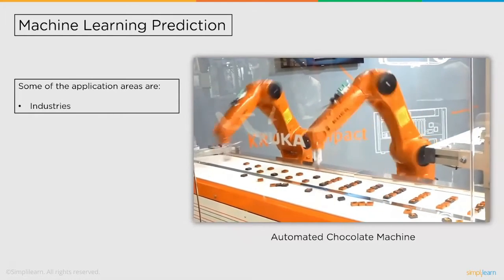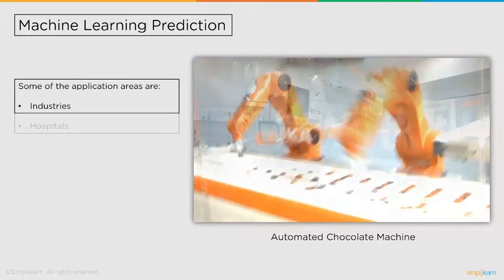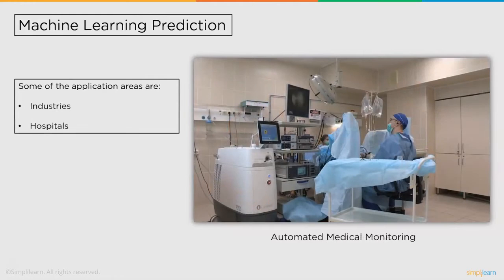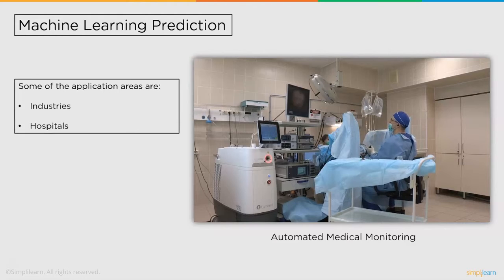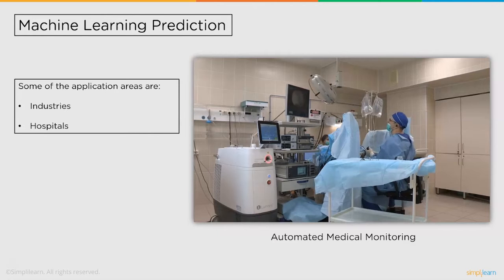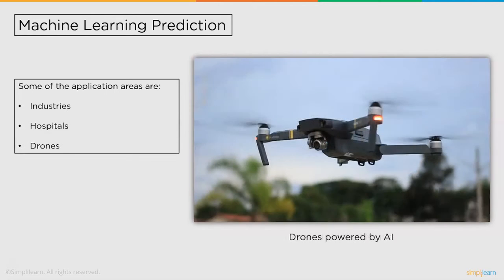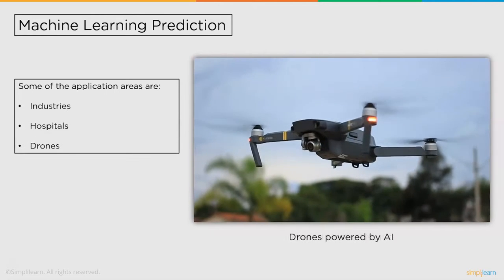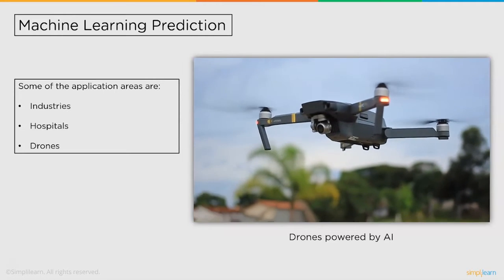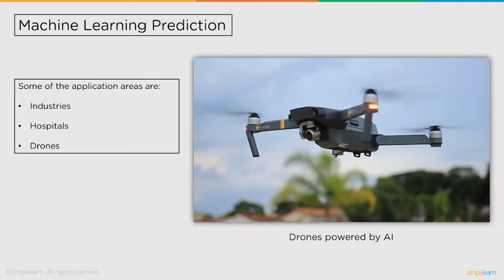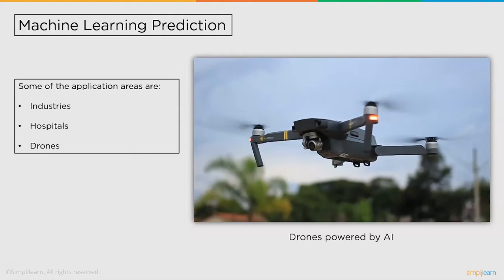Followed by industries, we have hospitals. Hospitals use advanced medical equipment for monitoring various body conditions. The newer machines can suggest actions based on specific conditions, and for that, Python programming is required. Next, we have Drones. Drones have become popular recently and they are mostly powered by AI, which in turn is powered by Python.